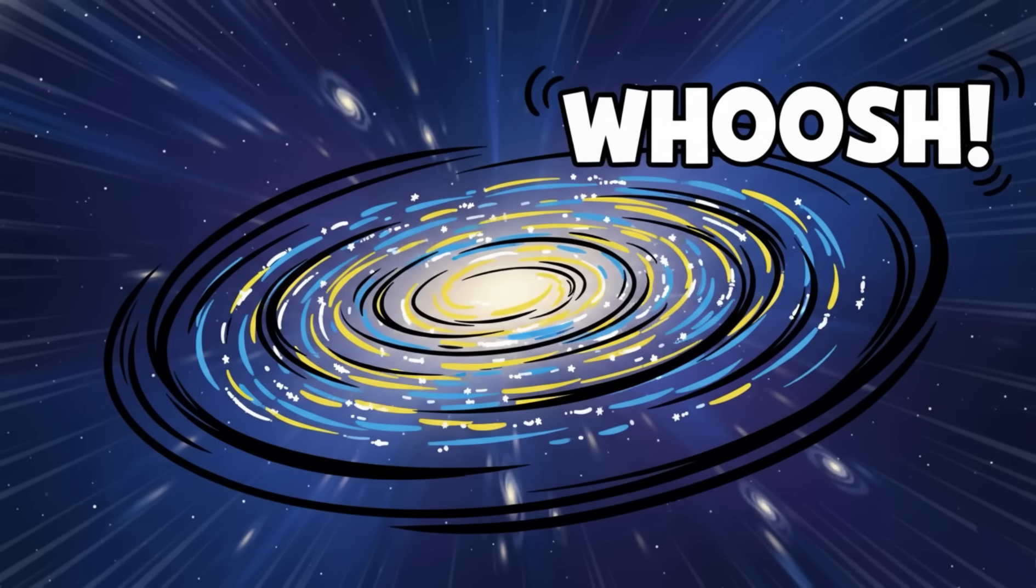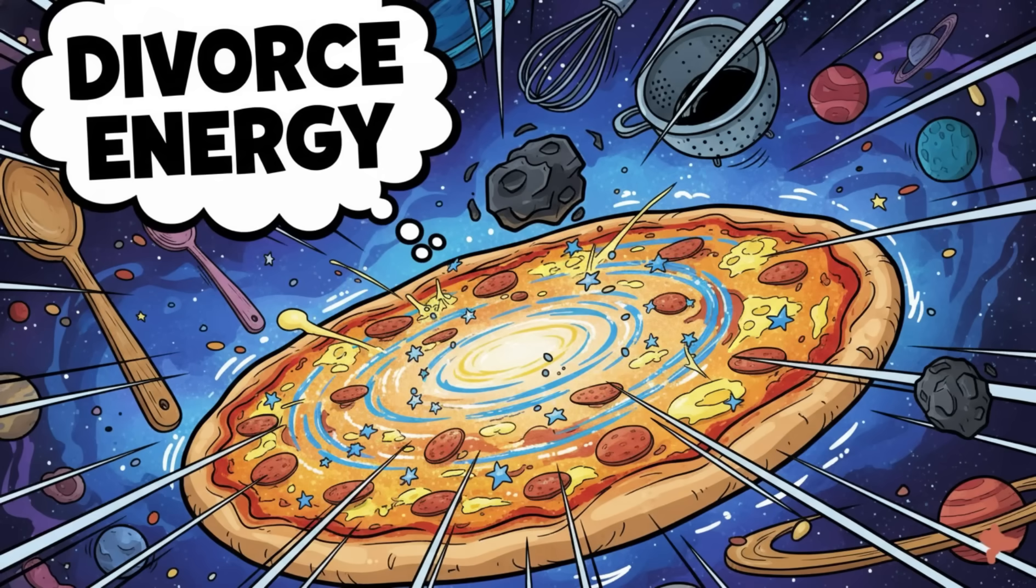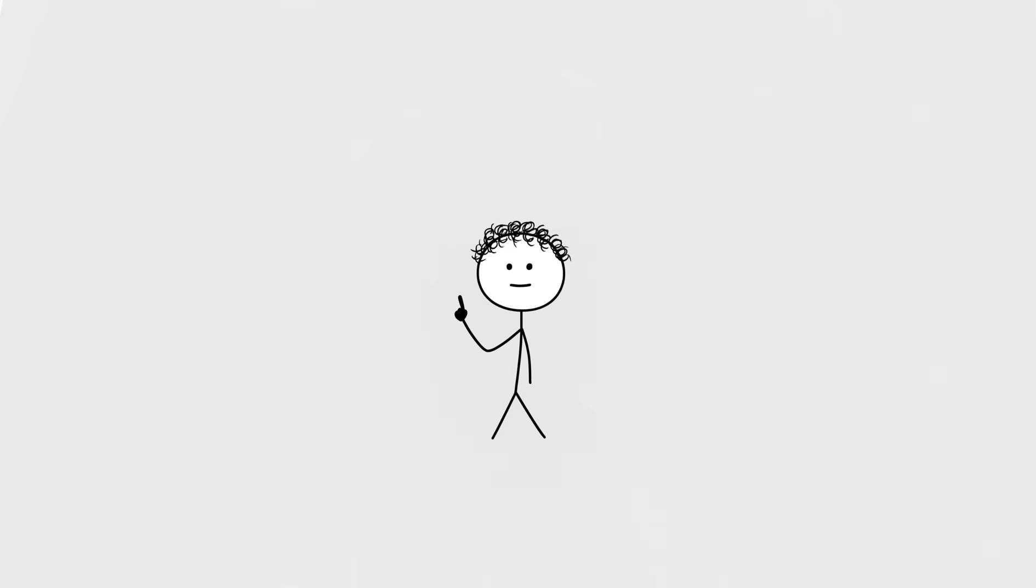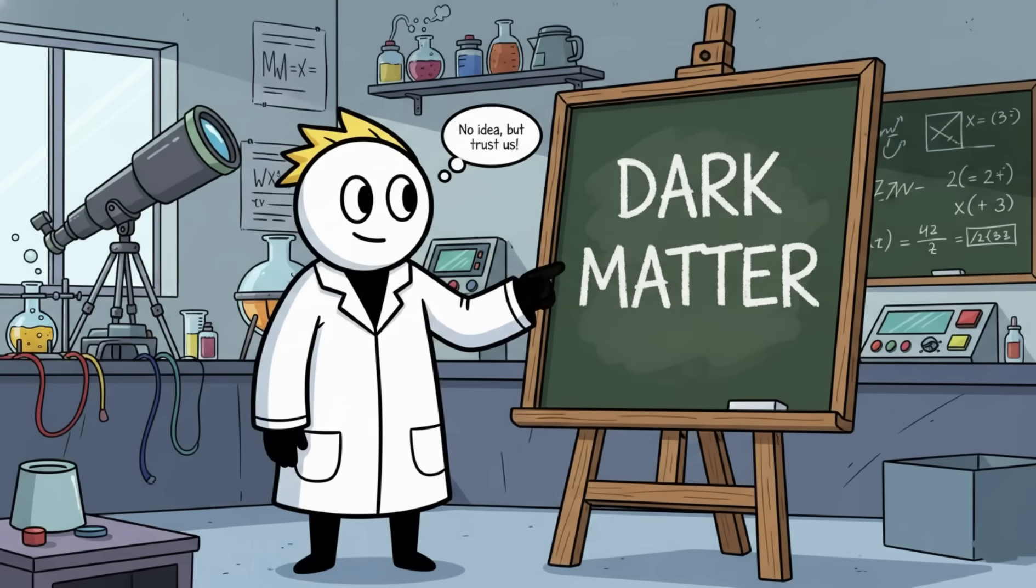Like cartoonishly fast. If the only thing holding them together was the visible stuff, stars, planets, dust, that one rogue asteroid with divorce energy, they'd all fling apart like cosmic pizza dough. But they don't. Something's gluing them together, something heavy, something everywhere, and something totally invisible. So scientists, doing what scientists do, named it dark matter, which is science speak for we have absolutely no idea what this is but it's definitely there, we promise.